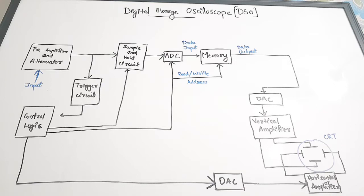Let us see about the digital storage oscilloscope and what all things are present inside. The name itself indicates that it is storing the input signals fed to it in a digital format. The digital storage oscilloscope is a device which stores the inputs by first converting them to a digital format. This digital data present in the memory is also processed, and since it is an oscilloscope, it also displays the waveform.